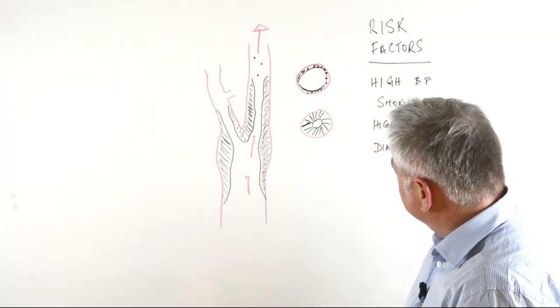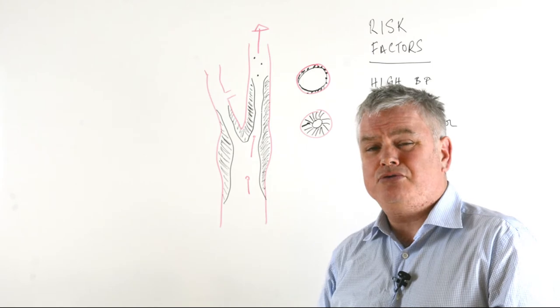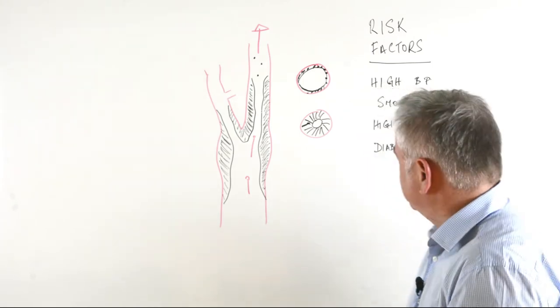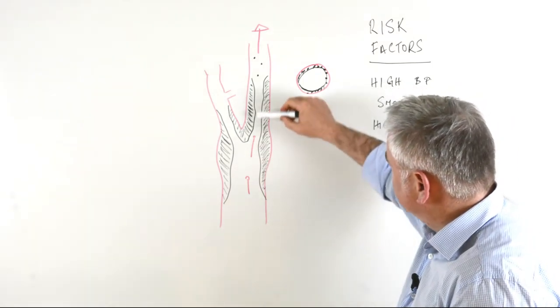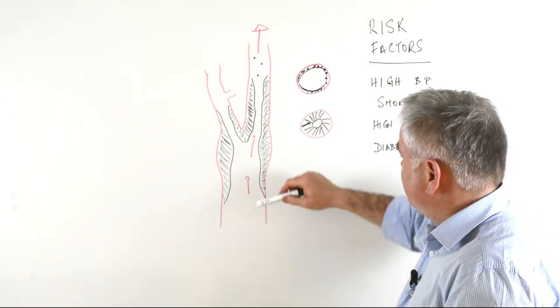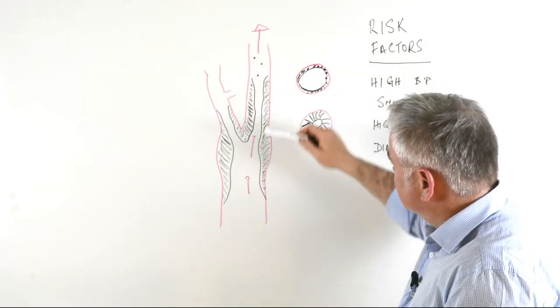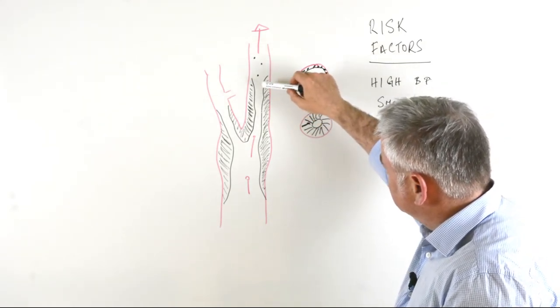Now as a result of this, if any of you ever put your finger under a running tap you'll know that you get a jet of water, so not surprisingly the blood flow through this particular area is much faster. Now a combination of the fast blood flow and the rather ragged lining can lead to a small number of particles being dislodged.